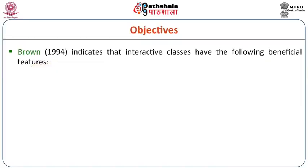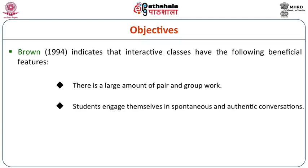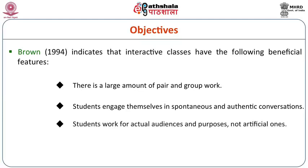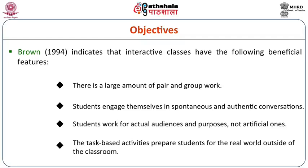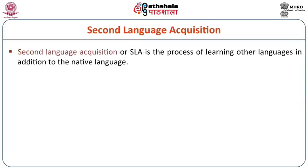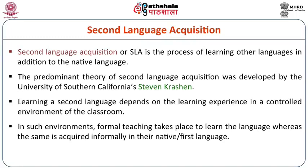Brown (1994) indicates that interactive classes have the following beneficial features: a large amount of peer and group work; students engage in spontaneous and authentic conversations; students work for actual audiences and purposes, not artificial ones; and task-based activities prepare students for the real world outside the classroom. SLA is the process of learning other languages in addition to the native language. The predominant theory of SLA was developed by Stephen Krashen of the University of Southern California, whose theories are important to discuss whether one agrees or opposes them.